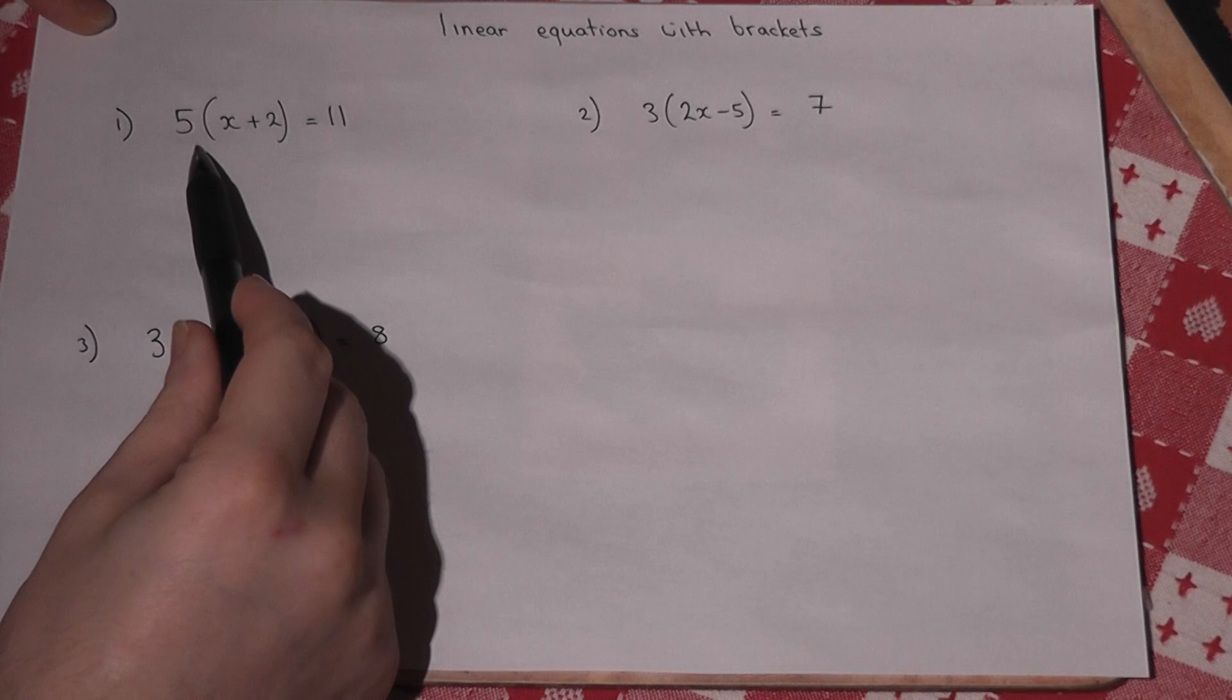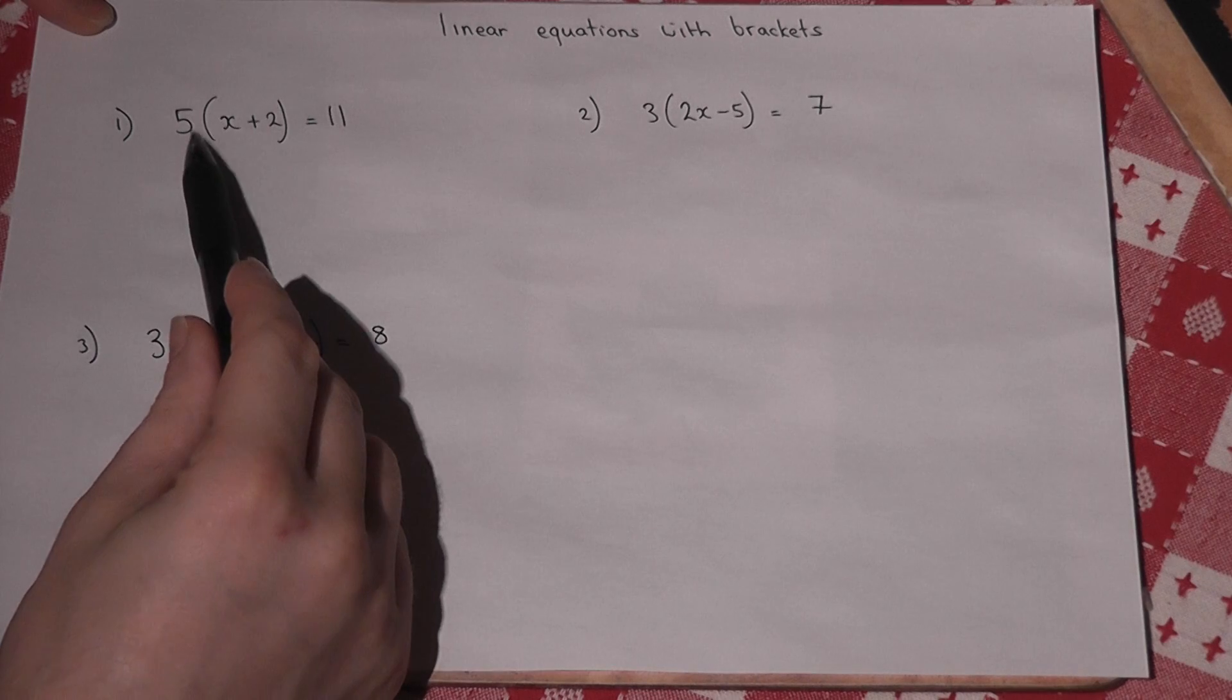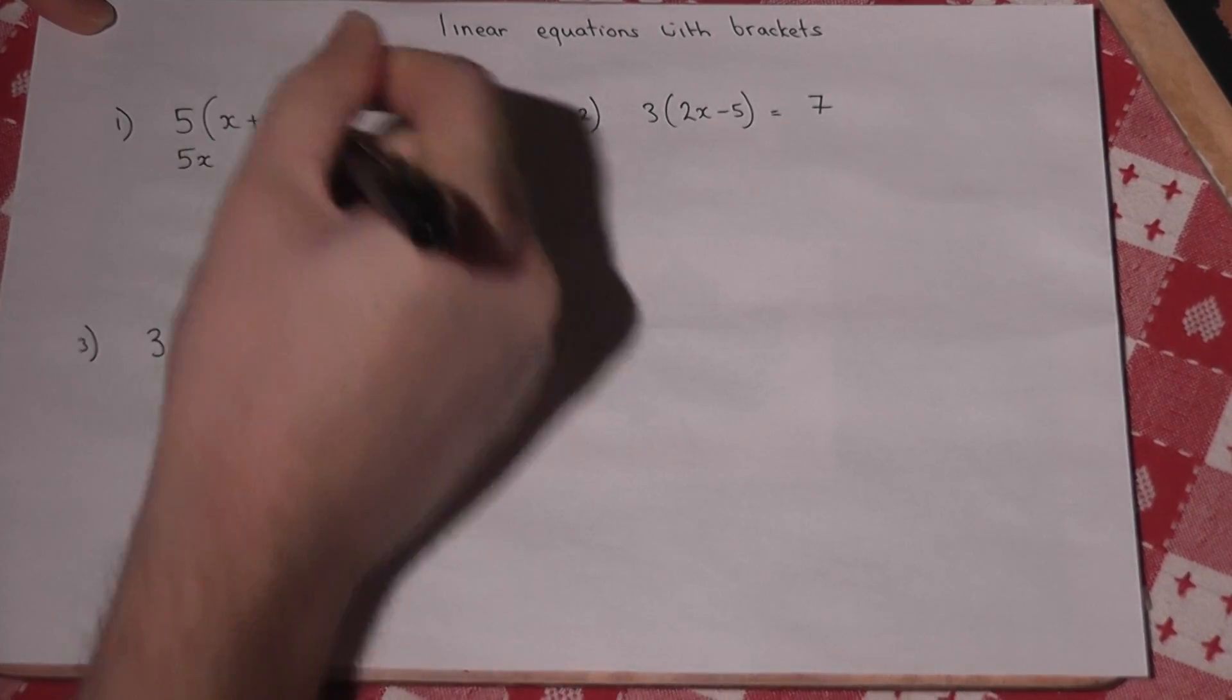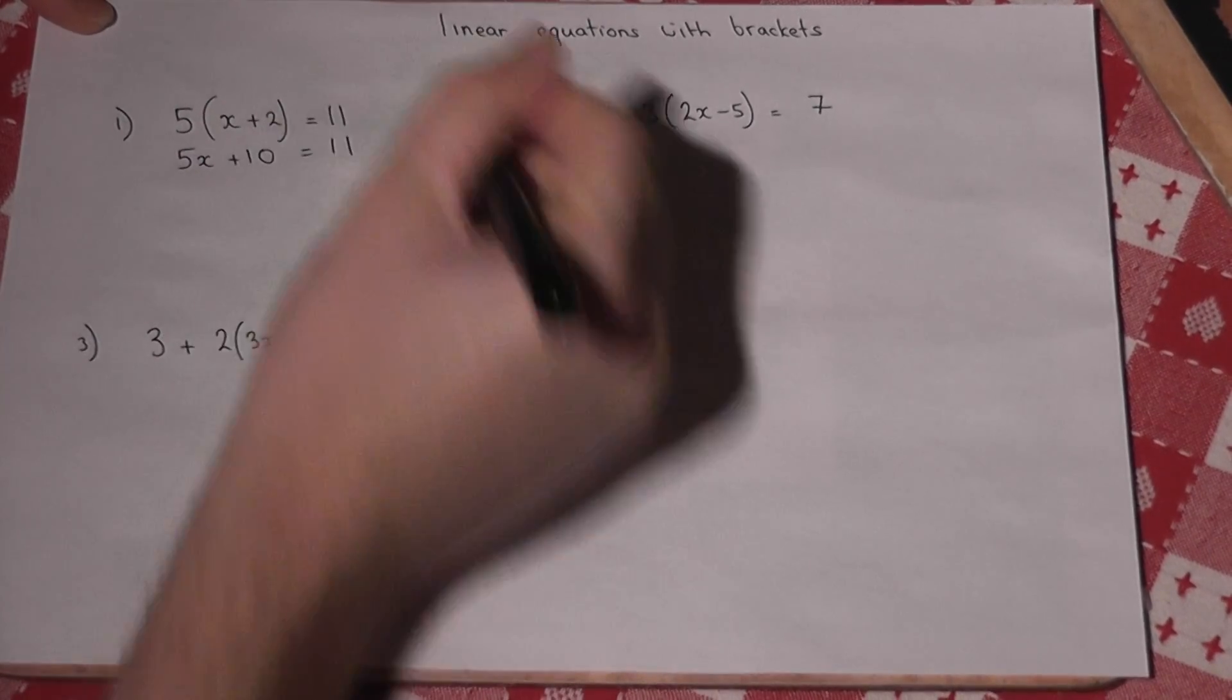So 5 bracket x plus 2 just means times the bracket by 5. So 5 times x is 5x, and 5 times 2 is 10. And this just equals 11.